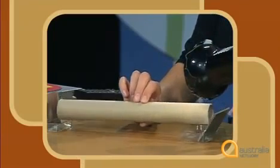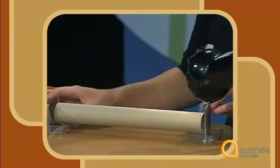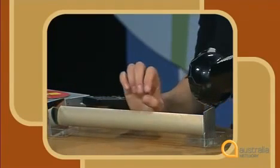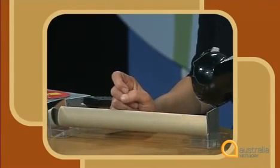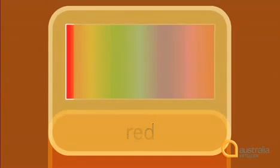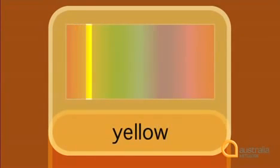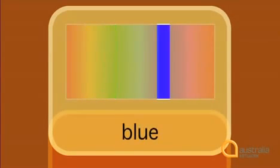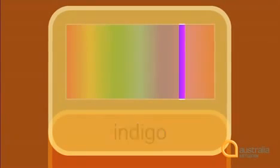Now let's finish by listening to Imogen and talking about colours. 'The lamp shines white light onto the crystal. Pumping energy into the crystal gives off light at a particular frequency to produce a particular colour.' Light contains all the colours of the spectrum or the rainbow: red, orange, yellow, green, blue, indigo, violet.